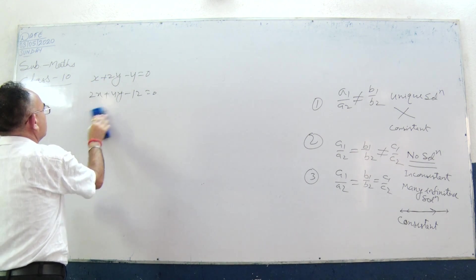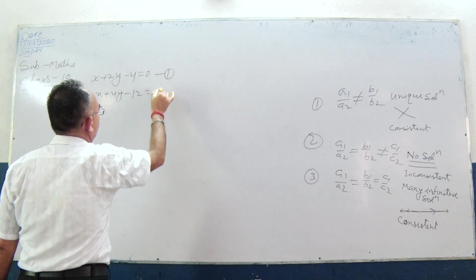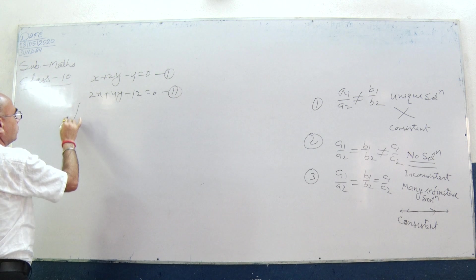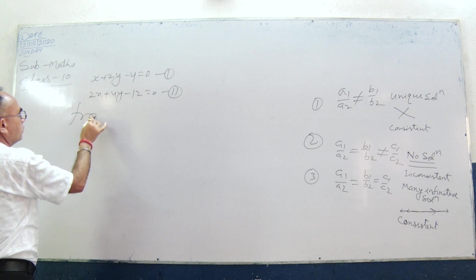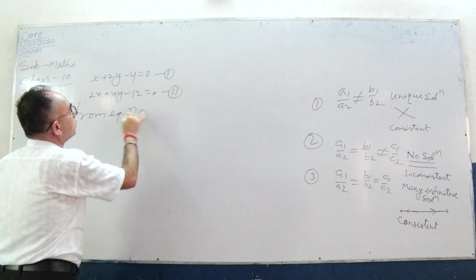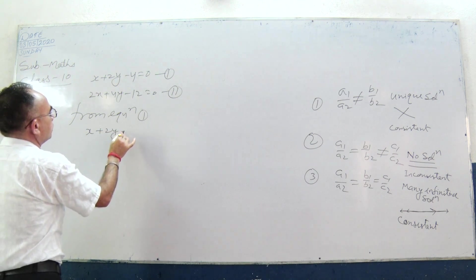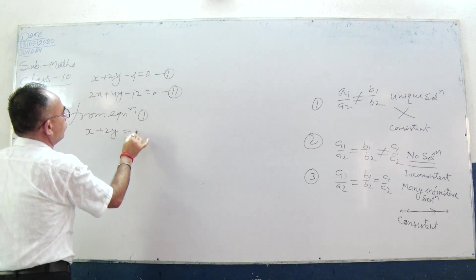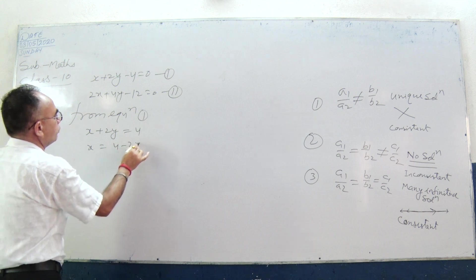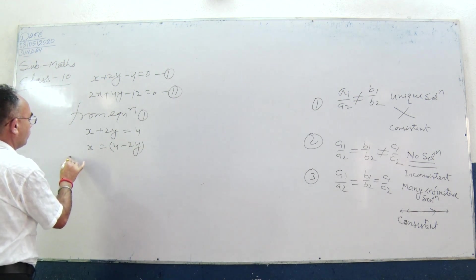We will take the first equation and the second equation. From the first equation: x plus 2y equal to 4, so x equal to 4 minus 2y. Putting this value into the second equation.